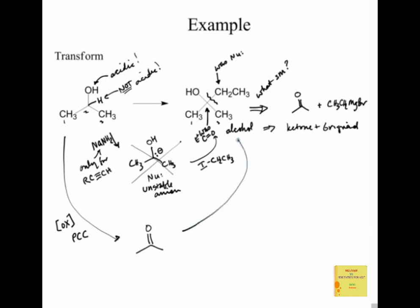Once I have the ketone, I react it with the Grignard: step one, add ethylmagnesium bromide; step two, H₃O⁺ workup. Every step in a synthesis problem should be a simple, ordinary reaction you've seen many times. It's the combination of reactions and the order in which you use them that makes multi-step transformations possible. Without a systematic approach and planning first, you can have some really disastrous consequences.